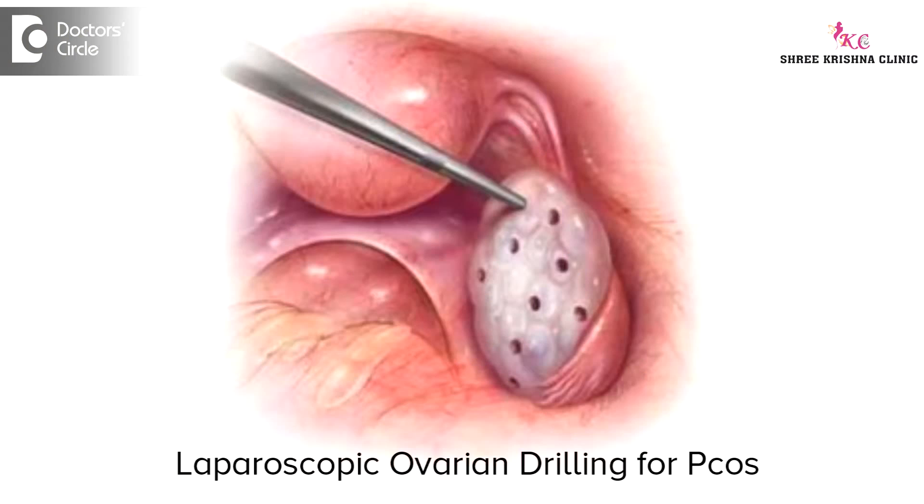Coming to the female partner, first the ovaries. If there is no ovulation, we have options like ovulation induction drugs. If they do not respond to this, we even have surgical options like ovarian drilling.